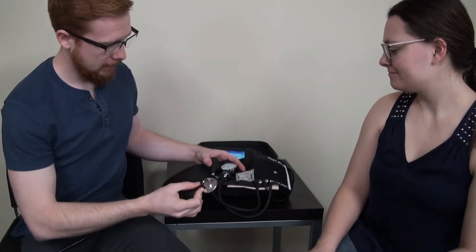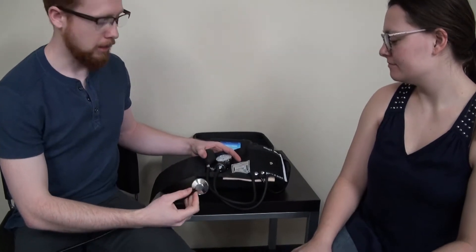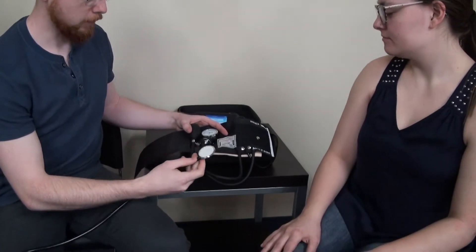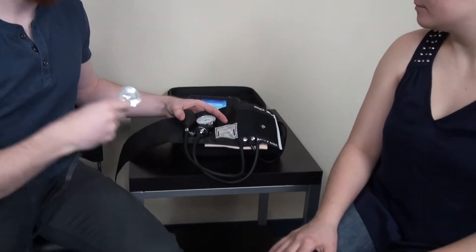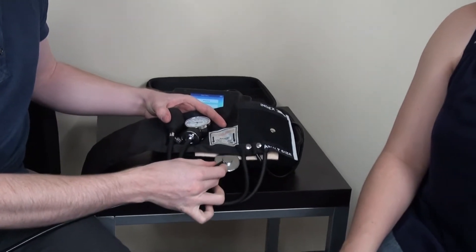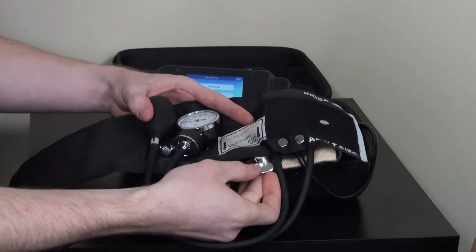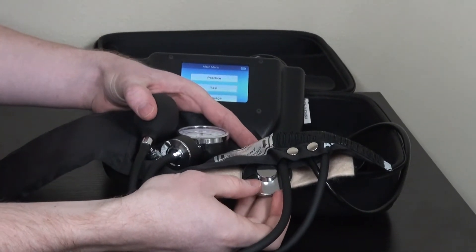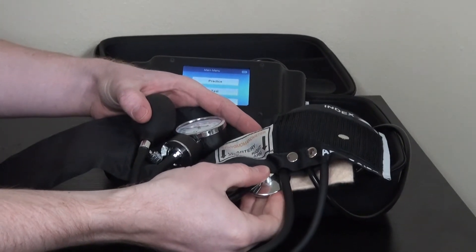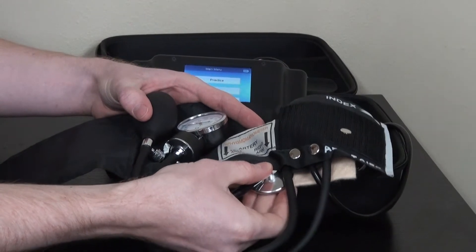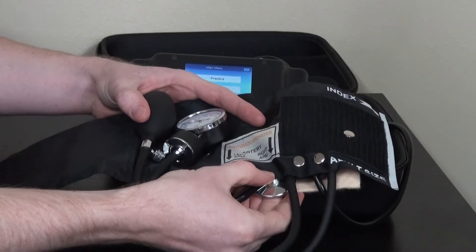We've provided a secondary skin underneath the cuff that allows for the transfer of sound into the standard stethoscope. By placing the stethoscope in the intended location over this secondary skin, we'll pick up on the five Korotkoff sounds based on the blood pressure.